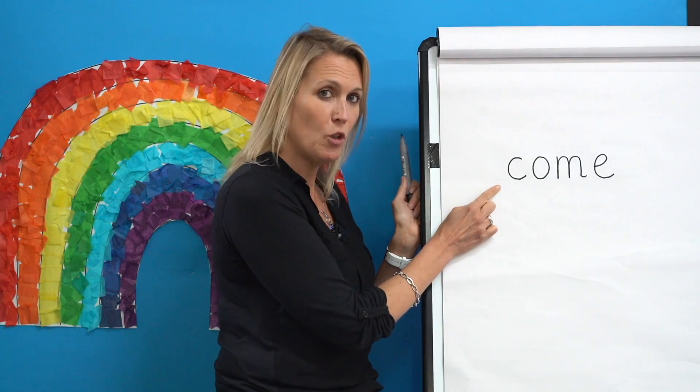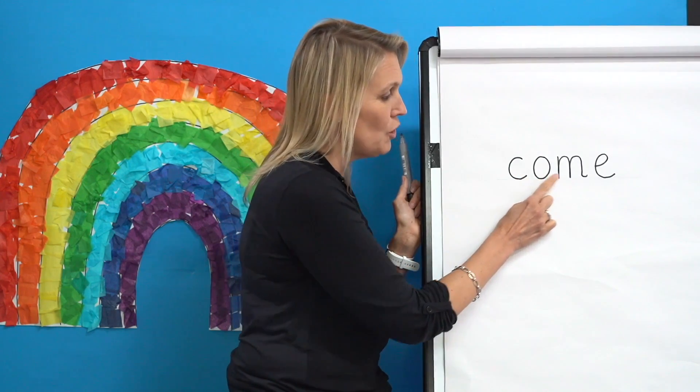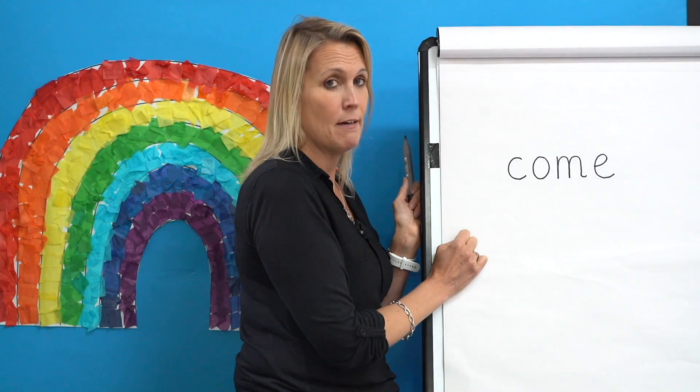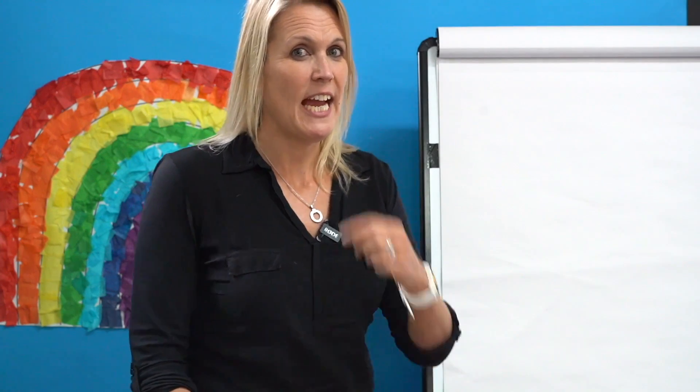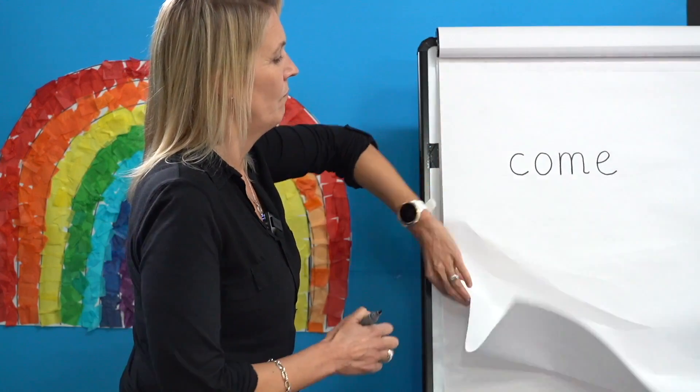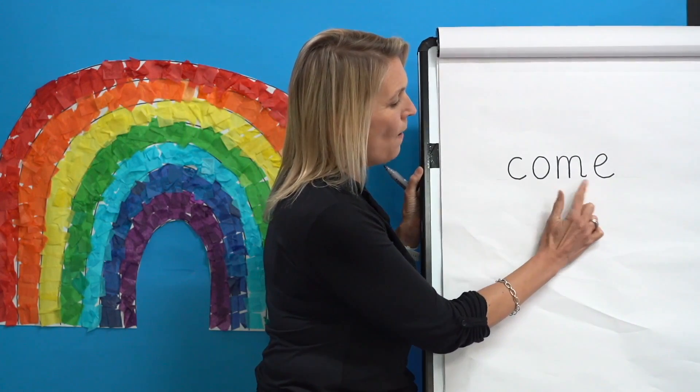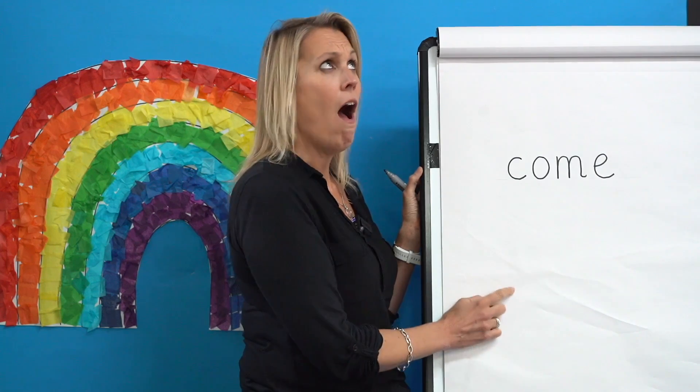Have a really good look because this is what your word needs to look like — there are four letters that you need to write down. I'm going to hide it. Have you had a good look? Good job. Say the word: Come. Say the sounds: C-U-M. Can you remember the tricky bit — the letters O and E make the sound 'a'. Write them down. Shall we check? C-U-M. Come. Does yours look like that? Amazing. Well done.